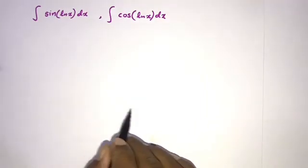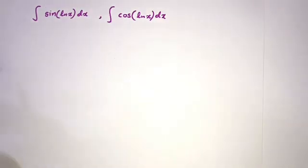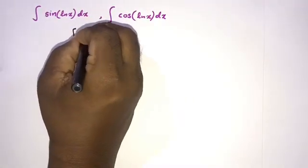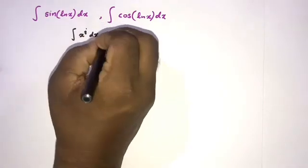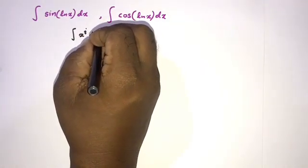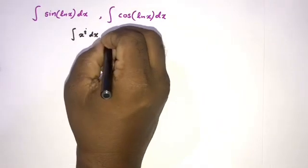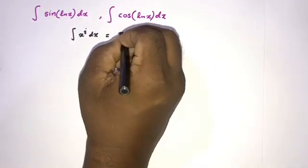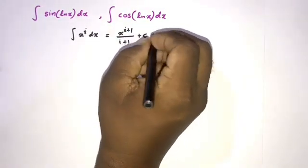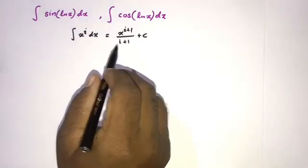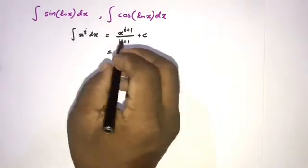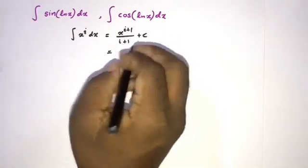The trick is: consider the integral of x^i dx. We know this equals x^(i+1) over (i+1) plus c, using the general power rule of integration. Now we multiply both numerator and denominator by (1 minus i).